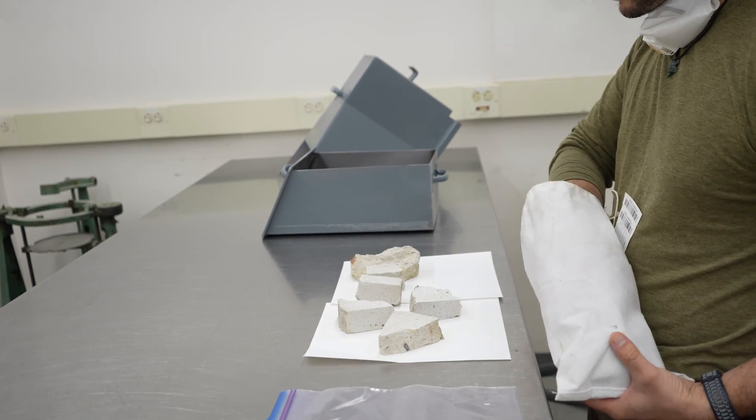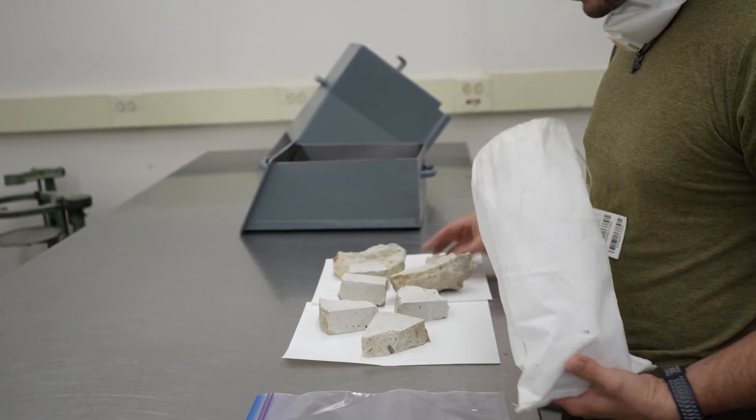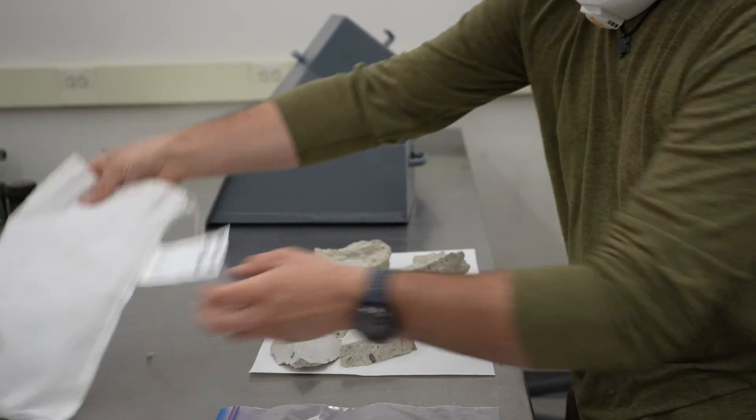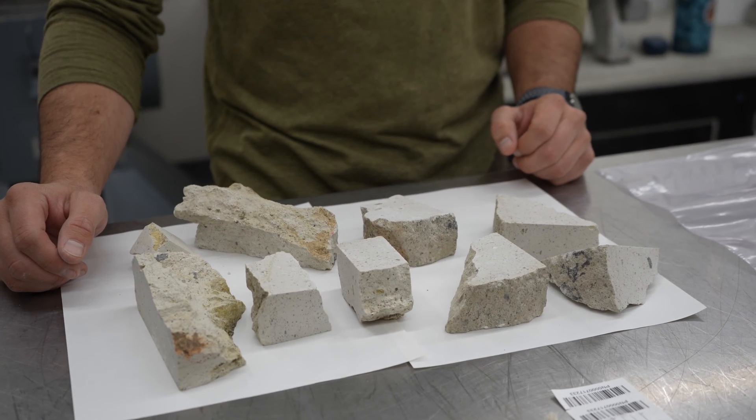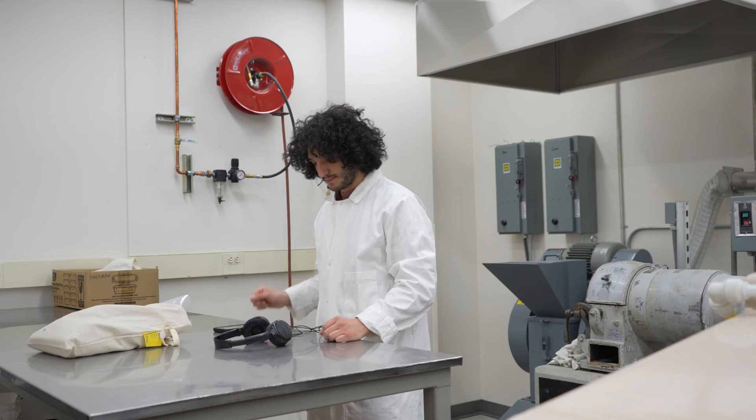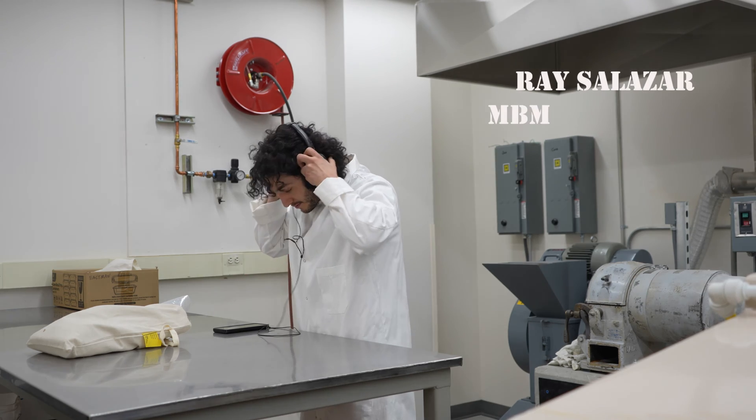The second step in our process is crushing each rock sample into a fine powder. We start with a jaw crusher to make pea-sized chunks and then a disc mill to grind the chunks into a fine powder. To avoid contamination, most of our time is spent cleaning the machines.